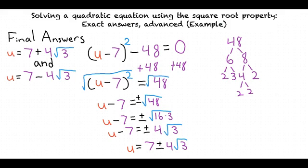This leaves our final answers to be u equals 7 plus 4 square root of 3, and u equals 7 minus 4 square root of 3.